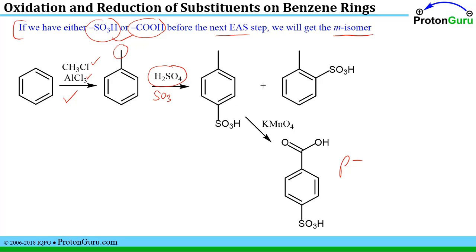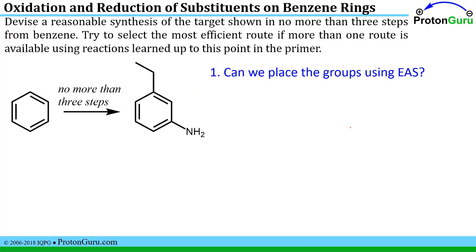This will give a mixture of the para and ortho isomers because the methyl group present before that step is an ortho-para director — it's an alkyl group. We do some sort of separation to isolate the para isomer and carry it forward to the next step, which is oxidation to give us the carboxylic acid.